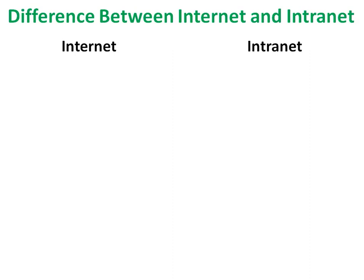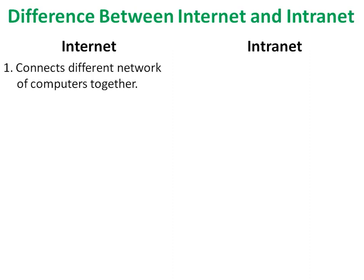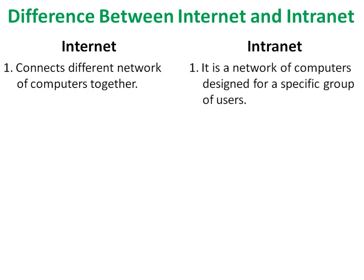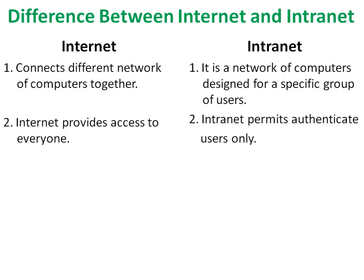Difference between internet and internet. Internet connects different networks of computers together, whereas internet is a network of computers designed for a specific group of users. Internet provides access to everyone, whereas internet permits authenticated users only.